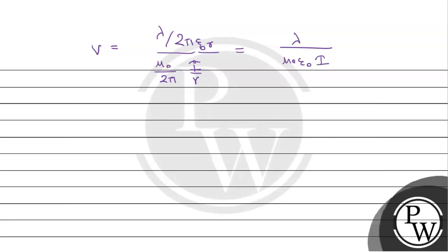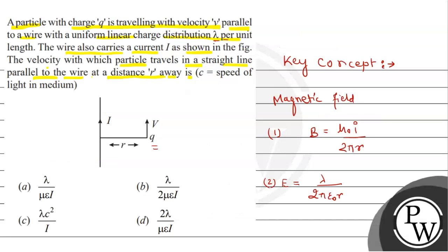so since we know that 1 upon root of mu naught epsilon naught this is equals to c therefore 1 upon mu naught epsilon naught is equals to c square c that is speed of light so ये expression जो है इसको above expression can be written as v is equals to lambda given upon mu naught epsilon naught के place पे आप लिख लेंगे c square upon i कई देखते की कौन सा option correct option है option c is the right option